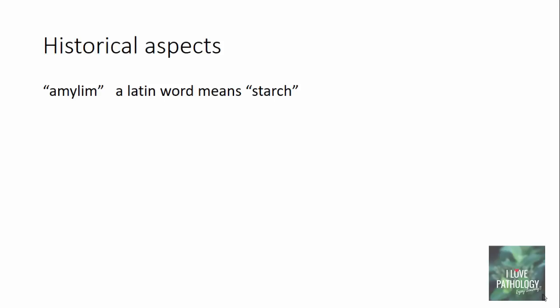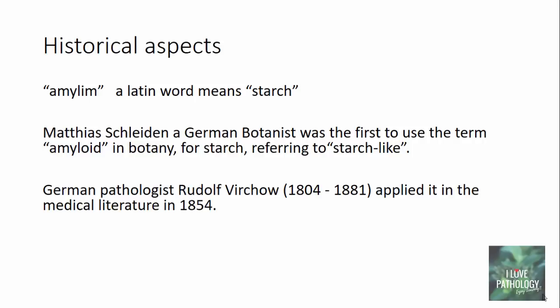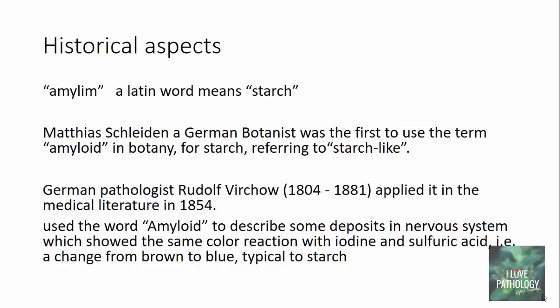Coming to the historical aspects of Amyloidosis: 'amyloid' is a Latin word which means starch. The word amyloid was first used by a German botanist called Matthias Ledin, who used it to mean starch-like. In the medical literature, it was German pathologist Rudolf Warkow who used amyloid for the first time to describe some deposits in the nervous system. These deposits showed the same color reaction with iodine and sulfuric acid — when painted with iodine the deposits turned brown, and when sulfuric acid was added they turned blue.